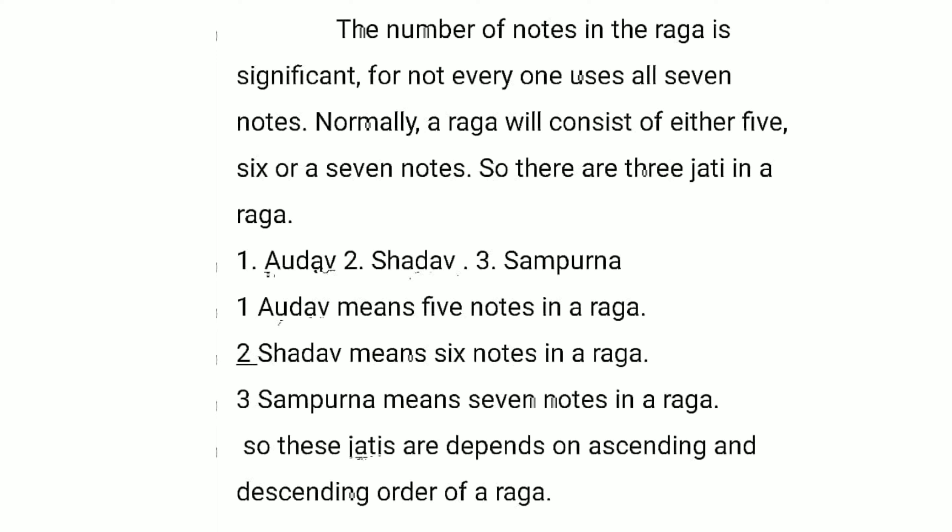These jatis depend on the ascending and descending order of the rag. If any rag has five notes in its ascending and seven notes in its descending, then the jati of that rag will be Audav-Sampurna, because ascending has five notes and descending has seven notes.